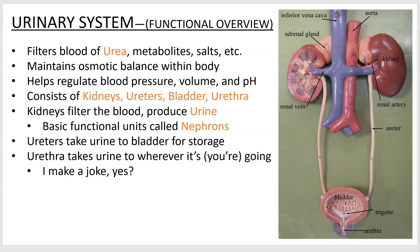Welcome to section 23, urinary system, for biology 2402 lab. The job of your urinary system is to filter your blood. Your blood builds up a lot of metabolites — things you don't want, waste material — and you need to get it out of there somehow. Your kidneys do that.